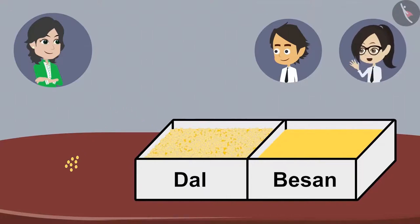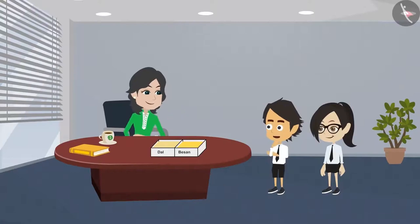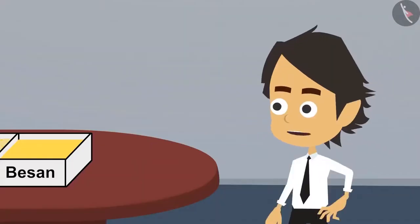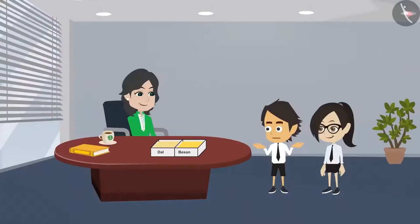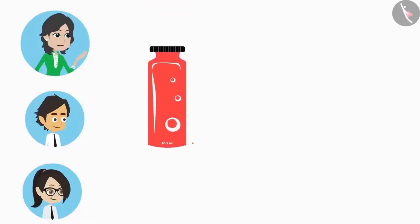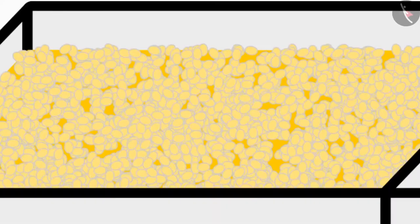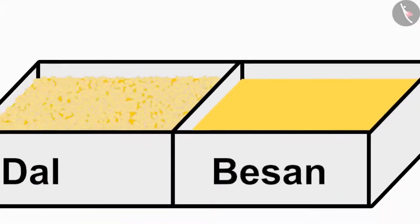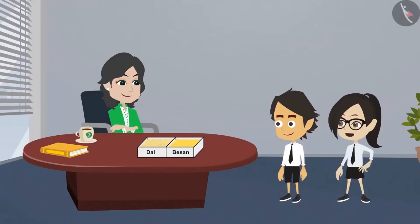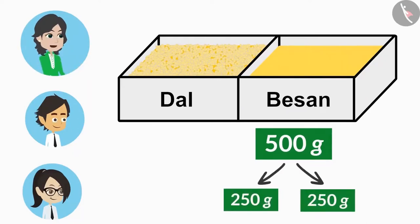This pile is huge. By the time I finish counting, it will be late in the evening. This is not the right way to measure dal. This means this is not the way to divide dal into two equal halves. We can neither cut nor count it, and unlike the liquid, we cannot measure besan. So how do we divide besan?